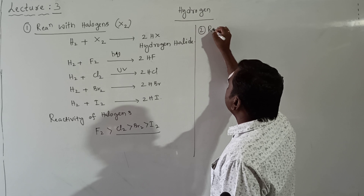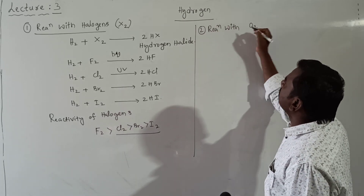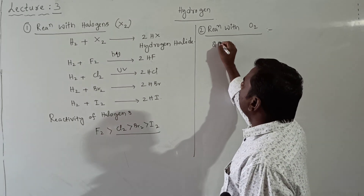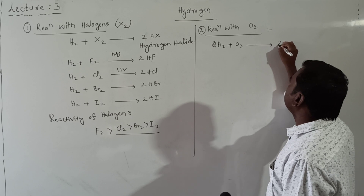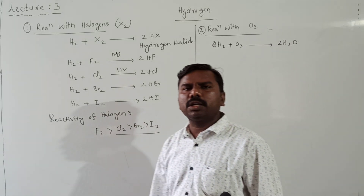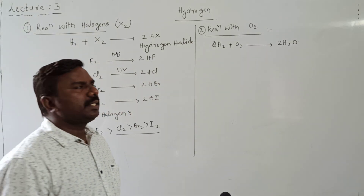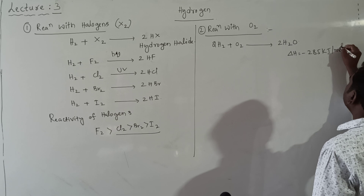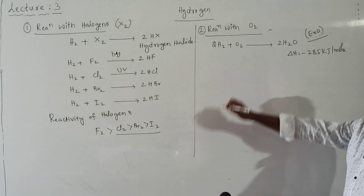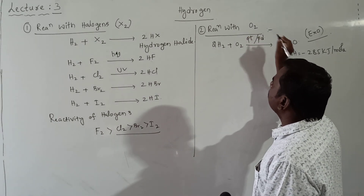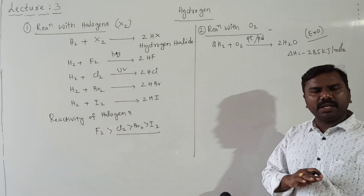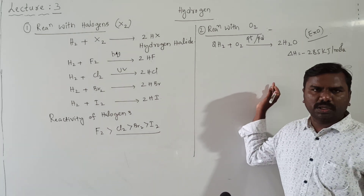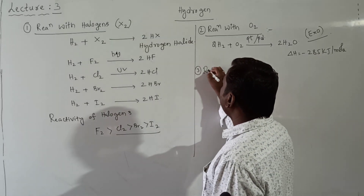Second: reaction with oxygen. 2H₂ + O₂ → 2H₂O. Water is formed here. This is an exothermic reaction: ΔH = −285 kJ/mol. A catalyst such as platinum or palladium is used, providing a surface for the reaction to complete.